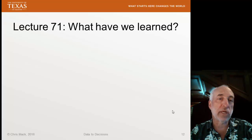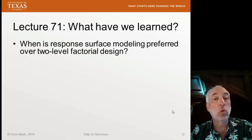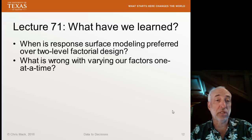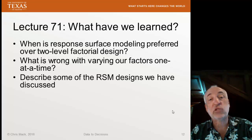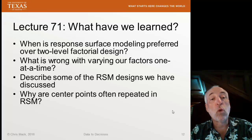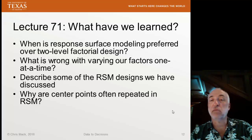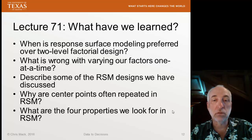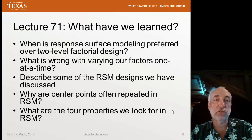Let's look at what we've learned in Lecture 71. You should be able to answer these questions: When is response surface modeling preferred over two-level full factorial designs? What's wrong with varying factors one at a time? Describe some of the RSM designs we discussed. Why are center points often repeated in response surface modeling? And what are the four properties we look for in RSM? Next time, we'll finish up with some final thoughts on design of experiments.